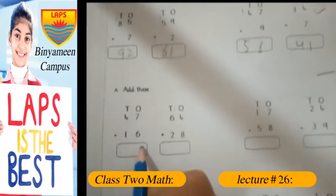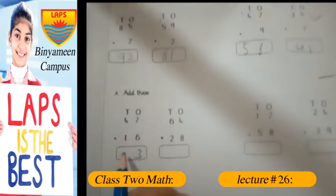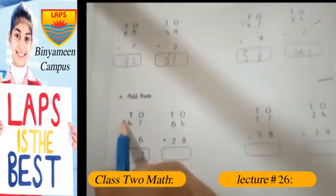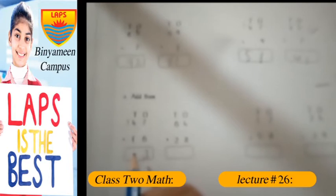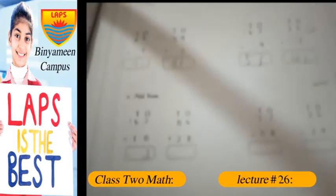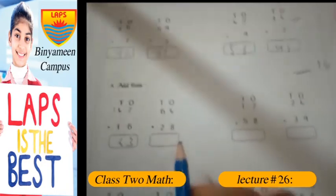Now for these here, 7 and 6 make 13. 13 and 1 will be carried here. 4 and 1 makes 5. 5 and 1 makes 6.